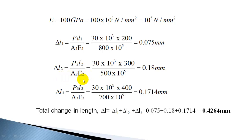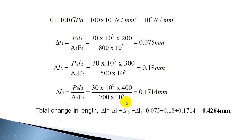Similarly, δL2 = P2·L2/(A2·E2). Substituting the force, length, area, and Young's modulus, you get δL2 = 0.18 mm. Now δL3 = P3·L3/(A3·E3): P3 = 30 × 10³ N, L3 = 400 mm, A3 = 700 mm², and Young's modulus = 10⁵ N/mm². So you get δL3 = 0.1714 mm.